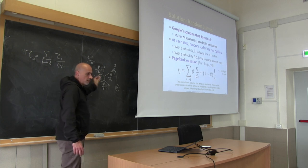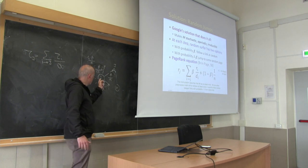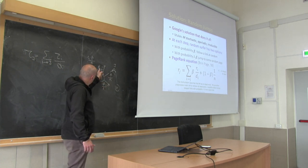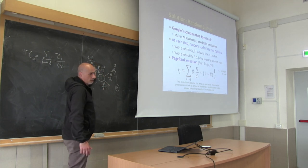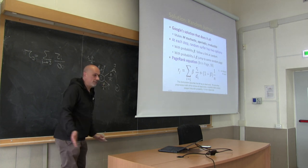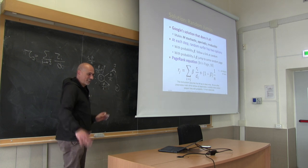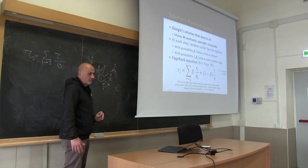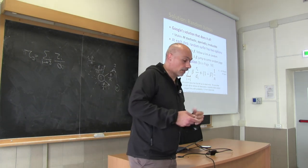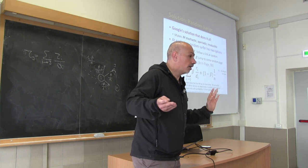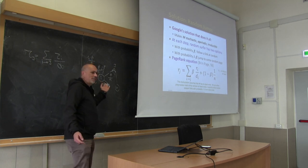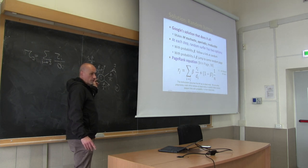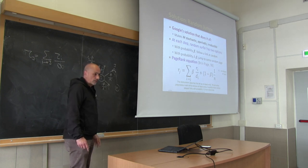If you look at the underlying graph, it is again a complete graph — but this is no longer a uniform Markov chain. Some edge probabilities are bigger than others, and by far the smallest transition probability you can have is (1 minus beta)/n. Most often this is way smaller than the original link probability. The Markov chain is now aperiodic and irreducible, essentially a complete but weighted graph, where weights on previously non-existing links are very, very small.